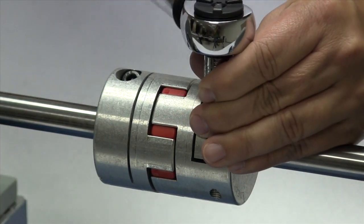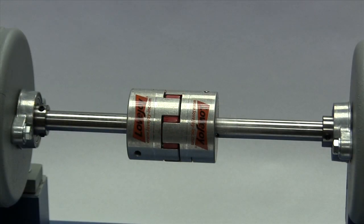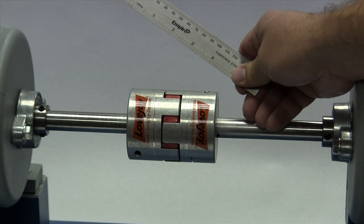At this time, we will tighten the clamp screw in the second hub using a torque wrench. Lay a straight edge across the hubs to check the basic alignment.